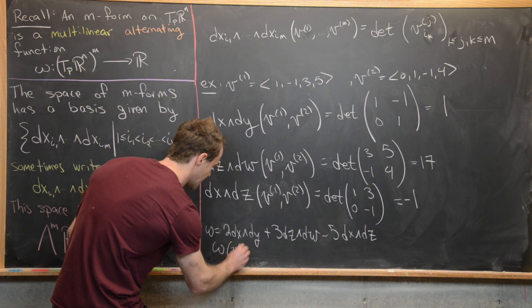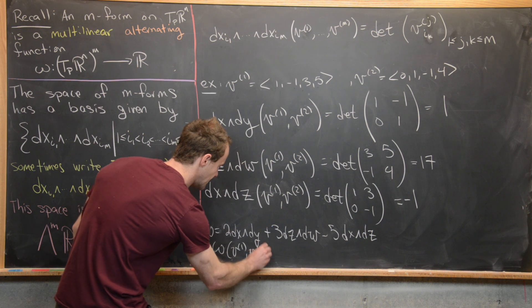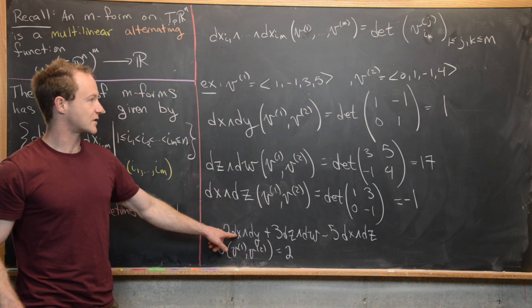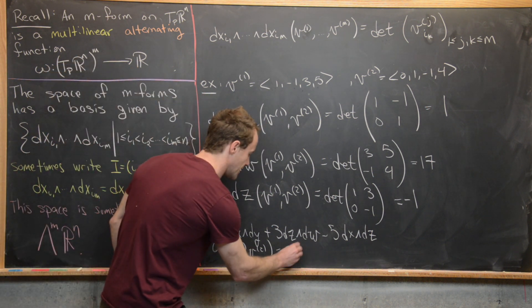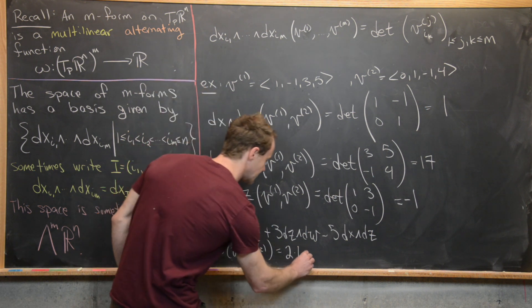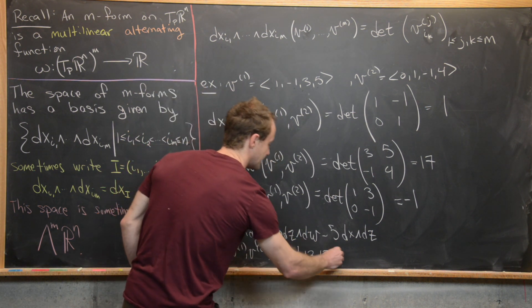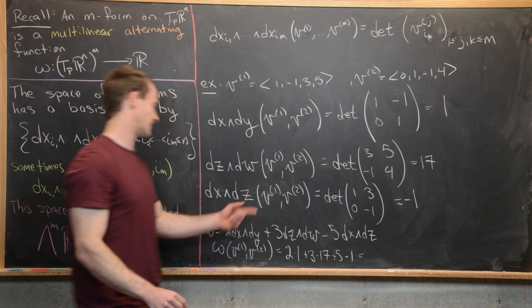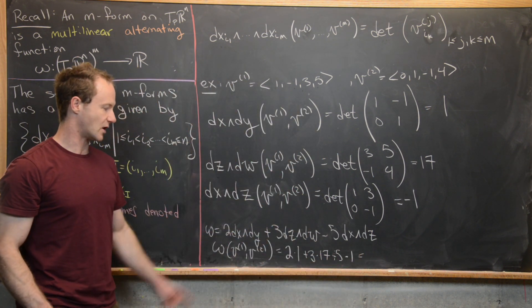So let's see what that does to these two vectors. So we'll have omega on V^1, V^2. So that's going to be 2, whatever we got from this first example, which was just the number 1, so times 1, plus 3 times 17, and then finally minus 5 times 1 because that's what we get for this DX wedge DZ part.